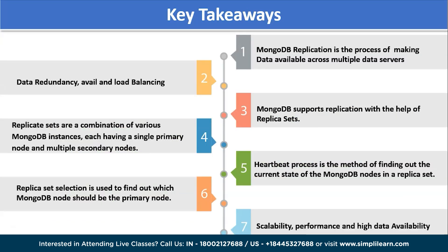To recap today's session: MongoDB replication is an important process that makes data available across multiple data servers. Data redundancy, availability, and load balancing are key factors in replication for maintaining a large, constantly changing database. MongoDB supports replication with the help of replica sets — combinations of various MongoDB instances, each having a single primary node and multiple secondary nodes. This process is driven by the heartbeat mechanism, which finds out the current state of a MongoDB node in a replica set.